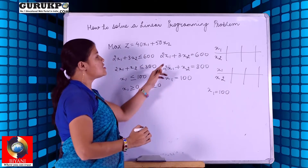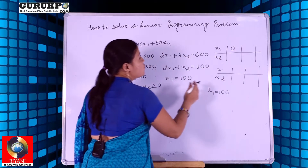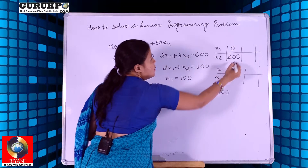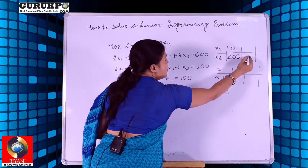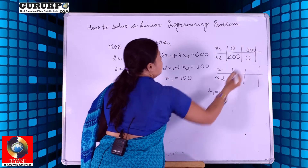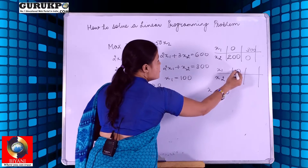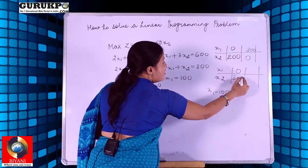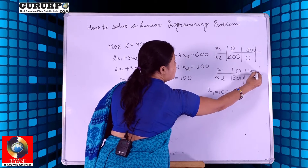For the first equation, assume x1 is 0 — the value of x2 arrives at 200. If we assume x2 is 0, the value of x1 arrives at 300. For the second equation, if x1 is 0 the value of x2 comes to 300, and if x2 is 0 the value of x1 comes to 150.